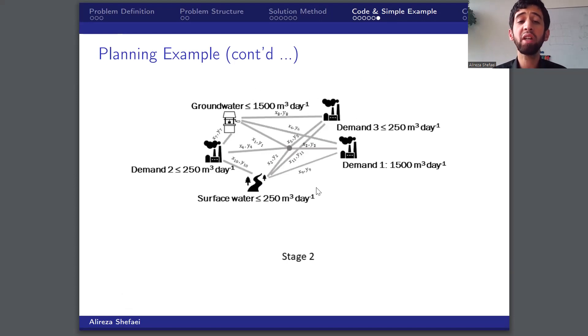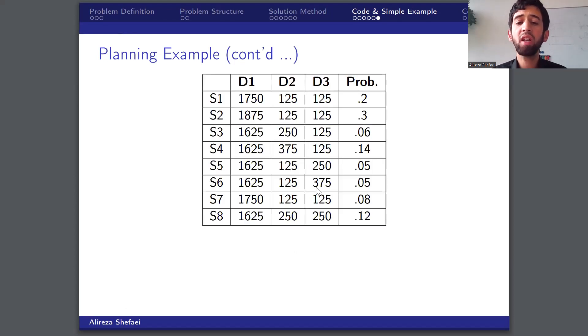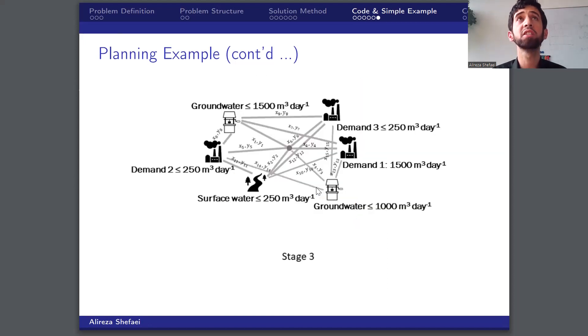These scenarios make the network layout as follows. If we consider the water demand scenarios for a prolonged period in accordance with this table, the system structure will be like this.